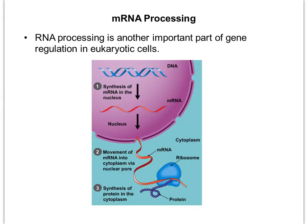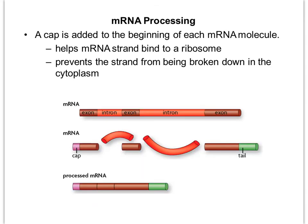When talking about transcription and translation in eukaryotic cells, we need to add one more step before mRNA can leave the nucleus and get translated into a protein: a process called RNA or mRNA processing, which occurs in the nucleus. The first modification is that a cap is added to each mRNA molecule, which helps the mRNA strand bind to a ribosome in the cytoplasm and also prevents the mRNA from being broken down before it can be translated.